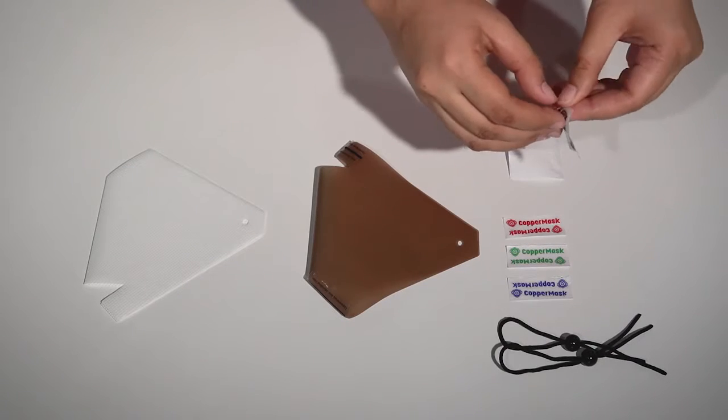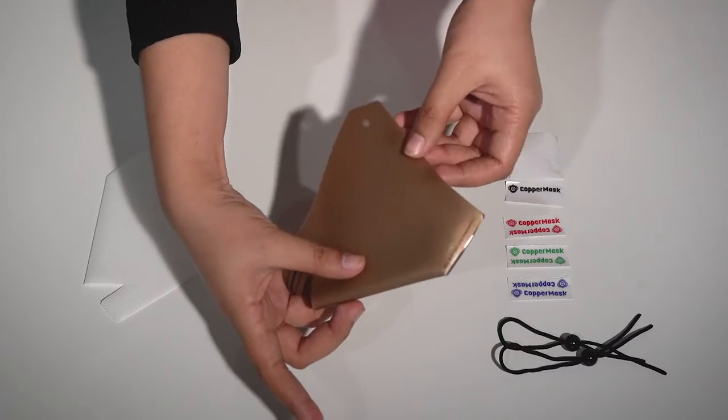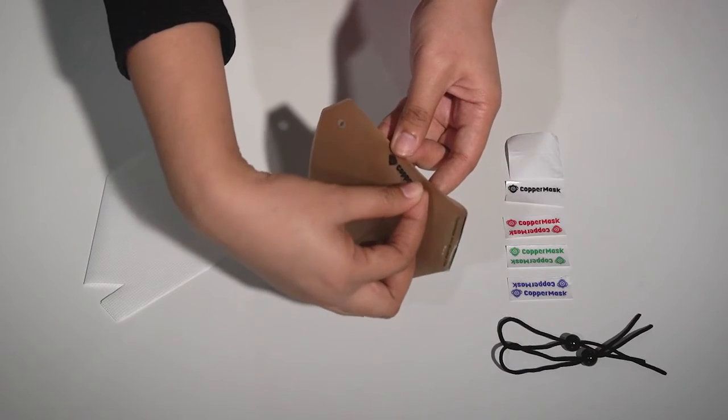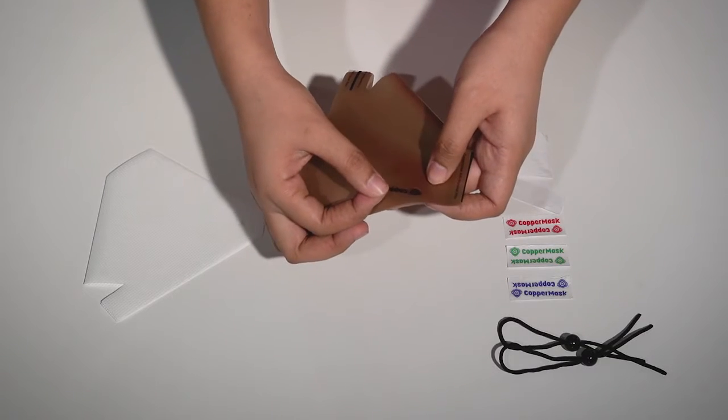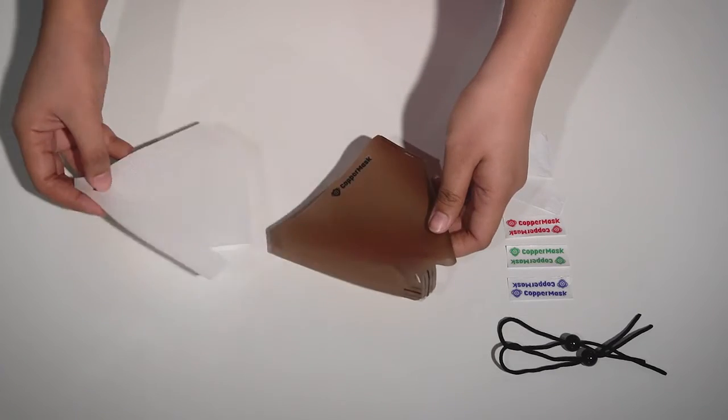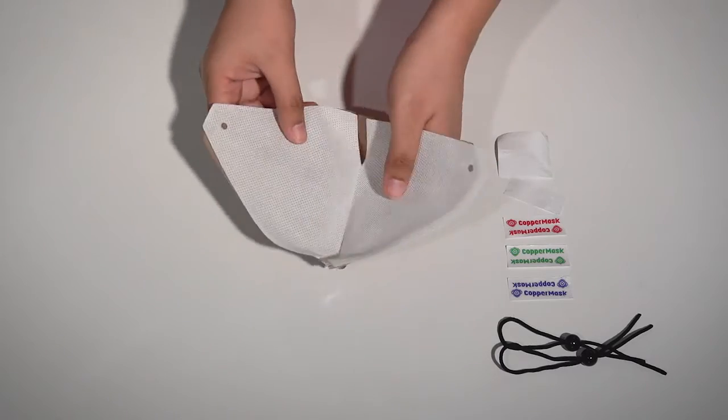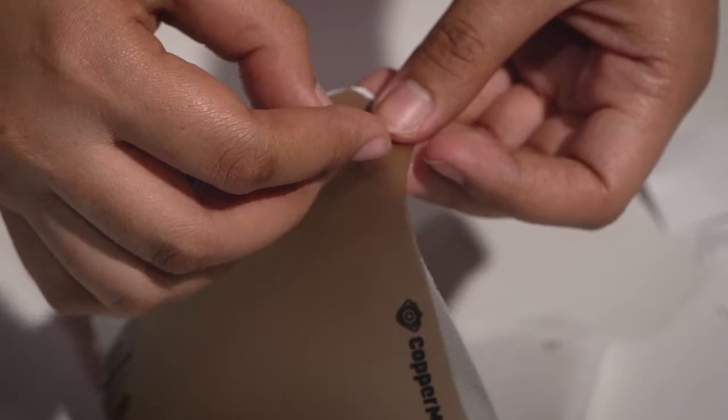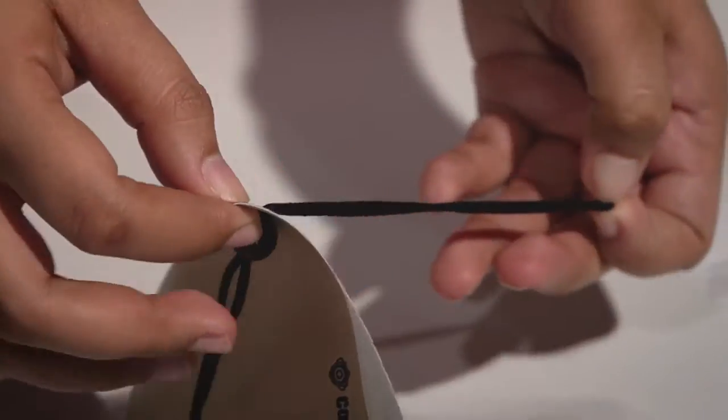Next, put the Copper Mask logo stickers on both the upper left and upper right side of the mask. After that, you can now place a piece of non-woven fabric filter inside the Copper Mask antimicrobial film. Finally, put the elastic string on both sides and adjust it depending on your preference.